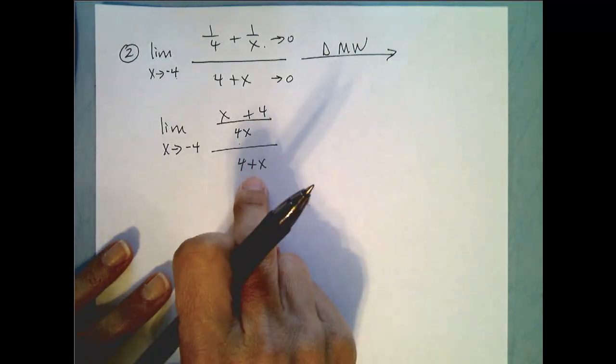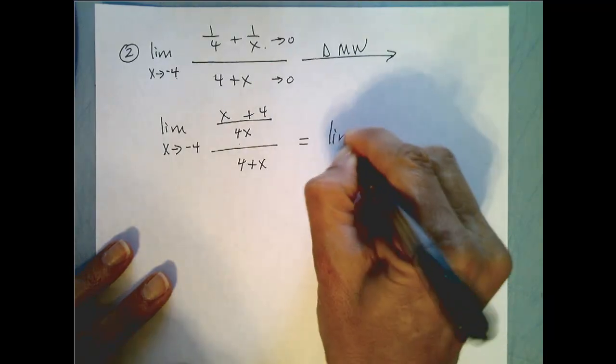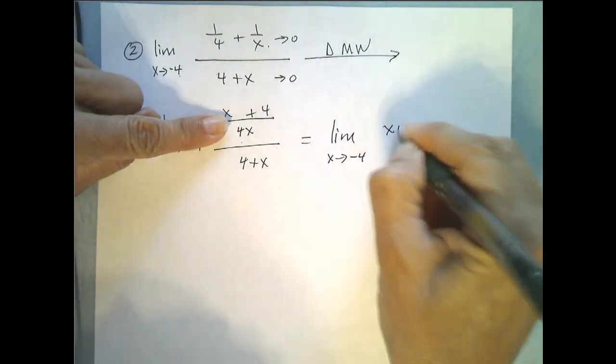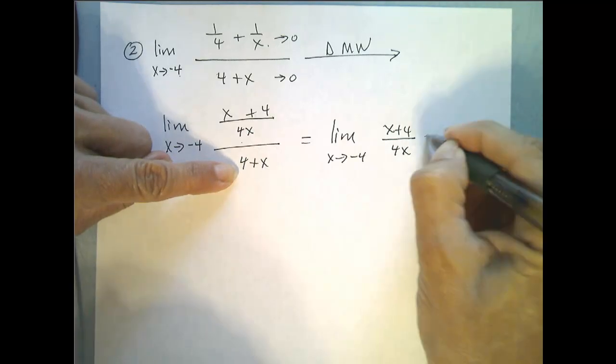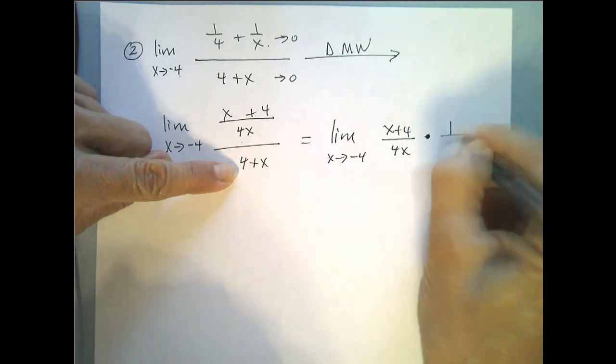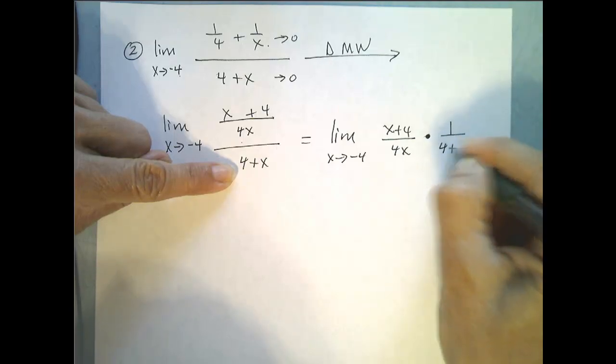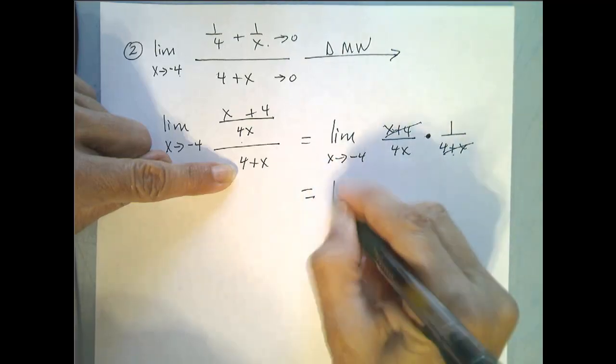So remember when we divide by a number that is equivalent to multiplying by its reciprocal. So this number x plus 4 over 4x is being divided by 4 plus x or multiplied by 1 over 4 plus x. Now these are equivalent so I can cancel them.